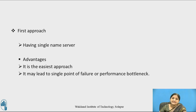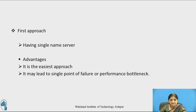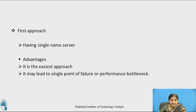The first approach is having only a single name server. The job of the name server is name resolution — mapping file names used by clients to files and directories stored as objects. Having a single name server is the easiest approach, but it may lead to a single point of failure or performance bottleneck, because a single name server cannot handle so many file requests, and if it fails, the whole name resolution process collapses.